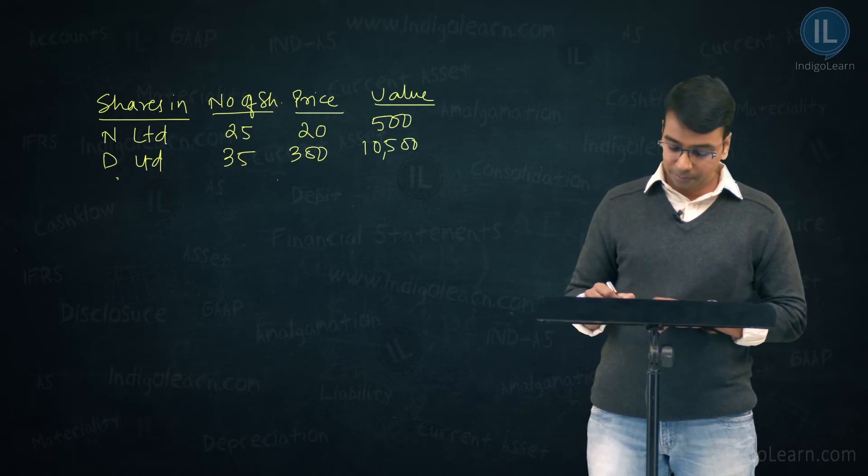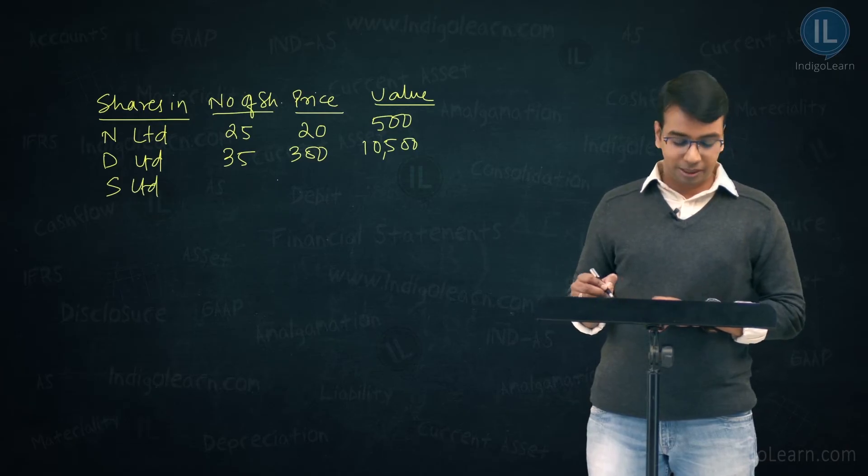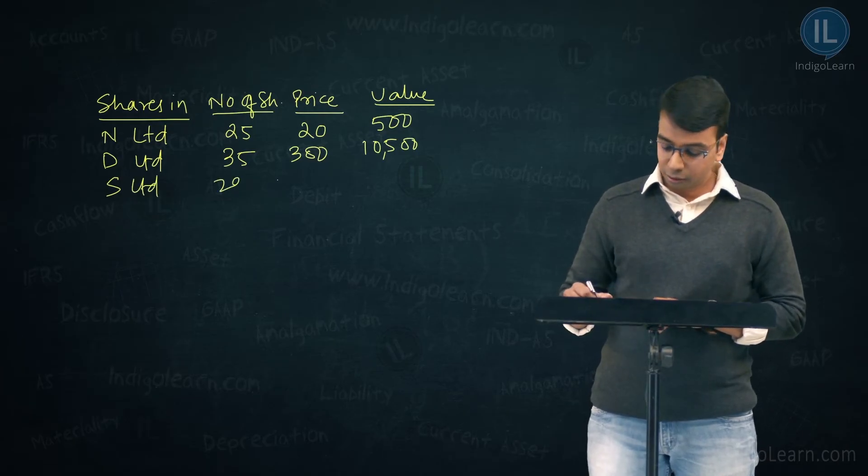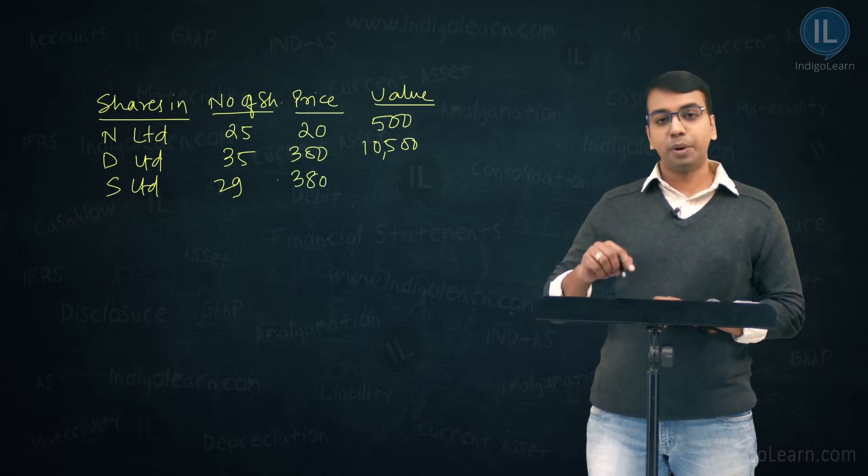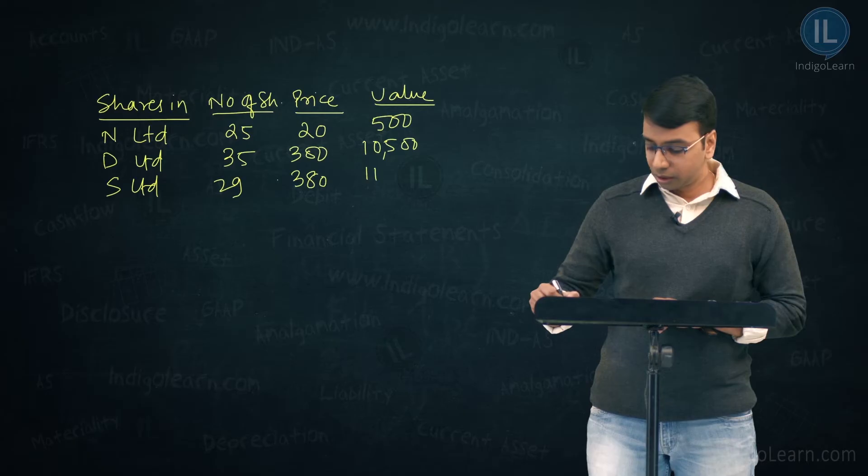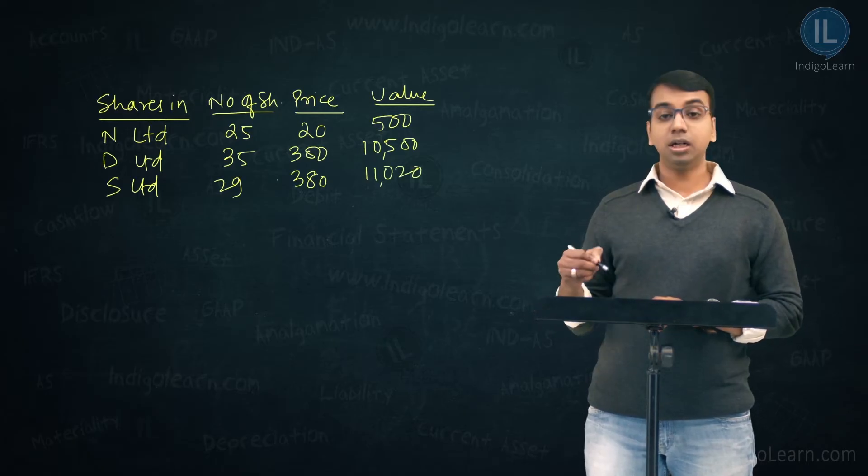The third company, S limited, number of shares 29, market price per share ₹380, 29 into 380, ₹11,020.